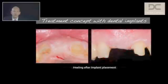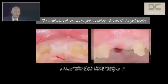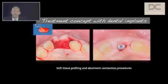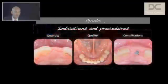After a healing period of about three months we have the current situation. We can still see that on the buccal side of the implant site there is a deficit on soft tissues. The next steps would be to perform some soft tissue grafting procedures using autogenous tissue, followed by abutment connection.